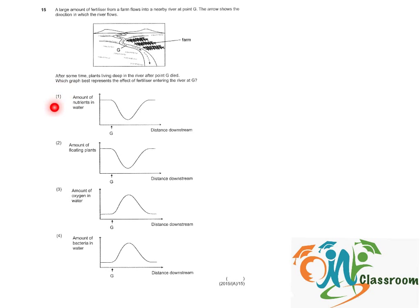Option 1: The amount of nutrients actually decreases. This is wrong because after the large amount of fertilizer flows into the river, the nutrients should increase.